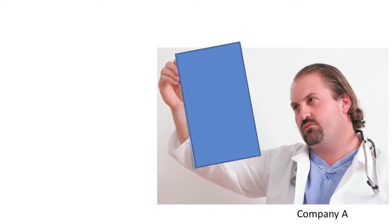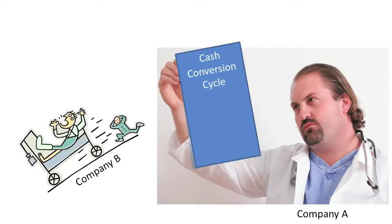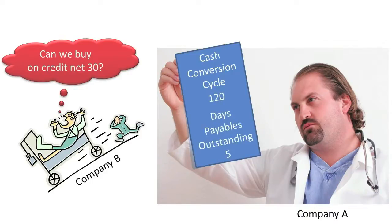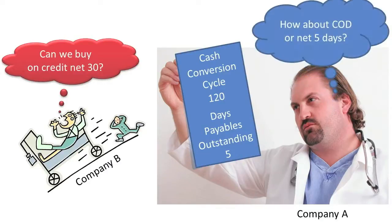Some companies study their potential customers' cash conversion cycles to determine what, if any, credit to grant to them and what their payment terms should be. For example, if Company B were to request credit from Company A — 30 days same as cash — Company A would most likely request Company B's audited financial statements so it could evaluate Company B's credit worthiness. Company A might then choose to compute Company B's cash conversion cycle as well as its days payables outstanding. If Company B only has 5 days payables outstanding, Company A might be wise to require cash on delivery (COD), or require payment within only 5 days.